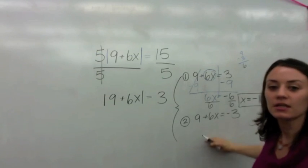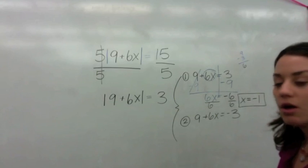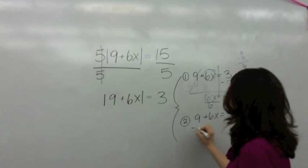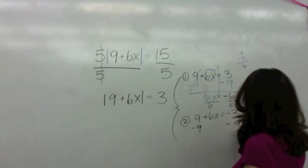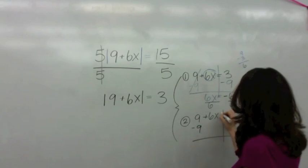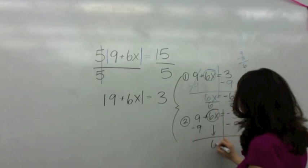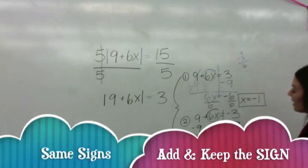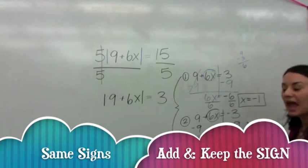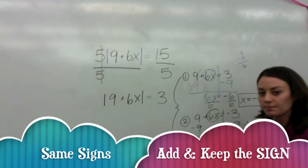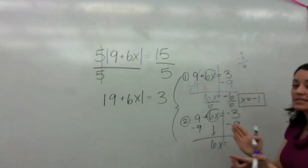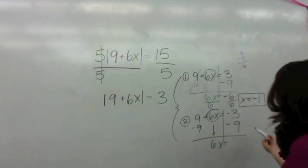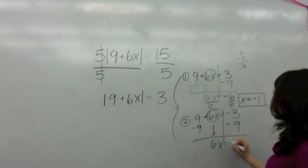All right. Now in this equation, we have the same equation, but it equals negative three. So we're just going to continue to subtract nine from both sides. Bring down the six X. Six X equals, oh, look at this. Negative three and negative nine. Are we going to add or subtract? We're going to add because it's same signs. Add and keep. Okay. So you have negative 12.